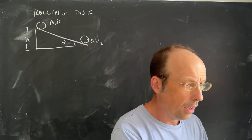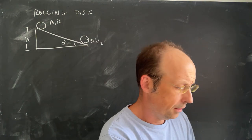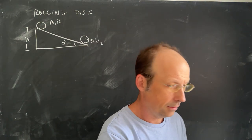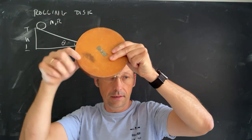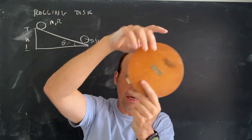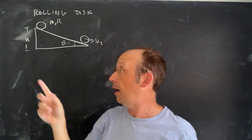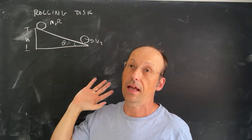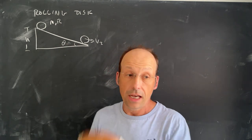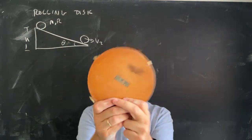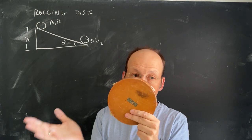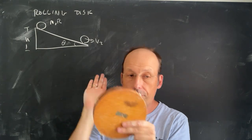Suppose you take a disc like this — I actually have a disc — and you let it roll down an incline. I have an incline with an angle of theta and a height of h, and I want to find out how fast the disc is moving at the bottom. It has a mass of m and a radius of r.